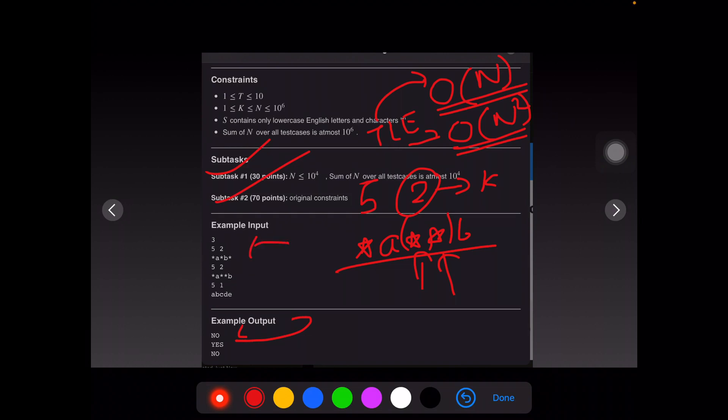For another example where it is star, a, star, b, star, and again n is given as 5 and k is given as 2, we can see that this time we don't find two consecutive stars and hence the answer is no.